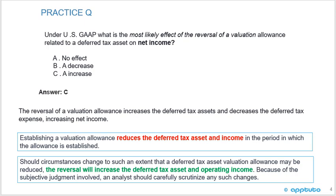The correct answer is C. The reversal of a valuation allowance increases the deferred tax assets, decreases the deferred tax expense, which is going to increase the net income.